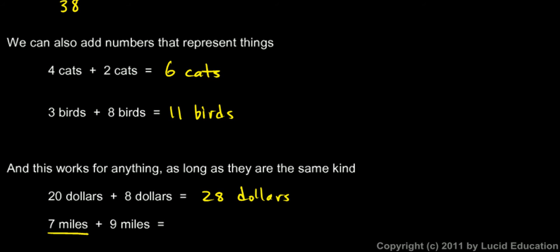Or if you walk seven miles and then you walk nine miles, you've walked a total of sixteen miles. So you can add things together as long as they are the same type or the same kind of thing.